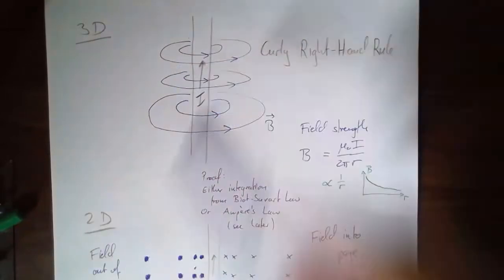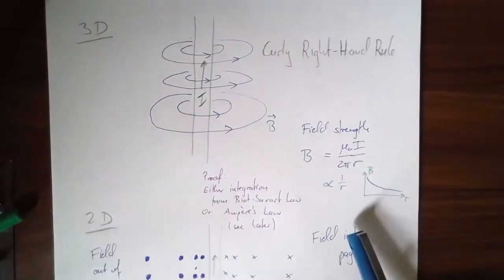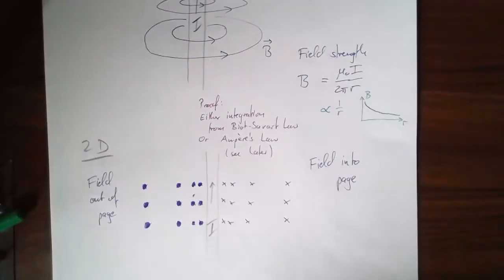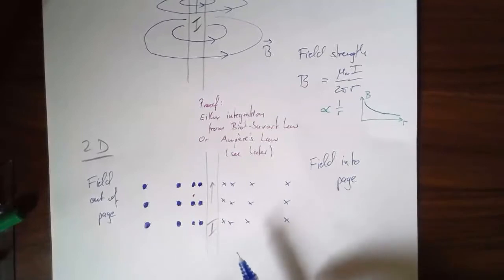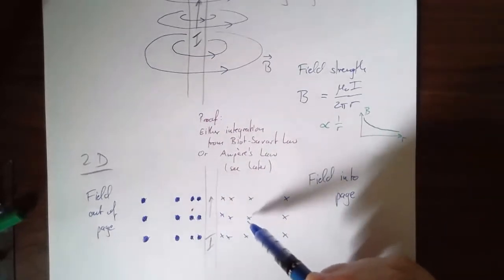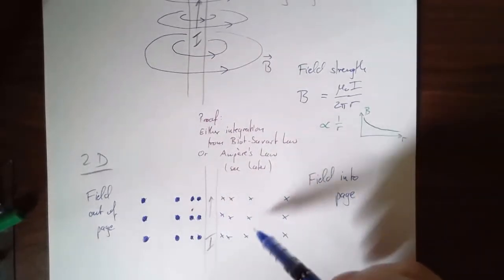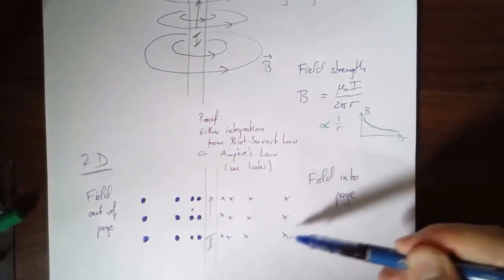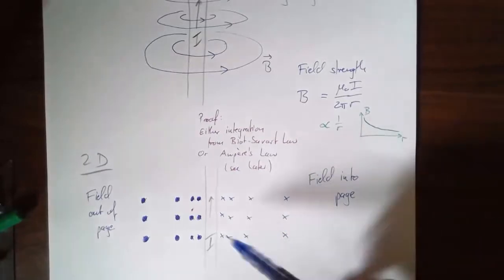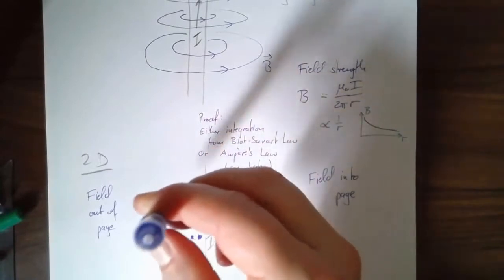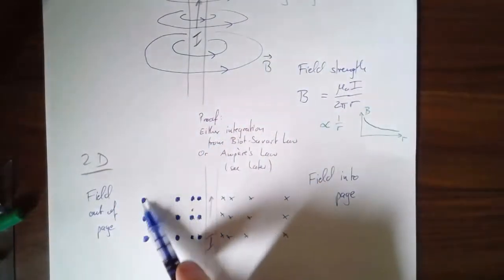If you try to draw this in 2D — it's hard to draw stuff in 3D unambiguously — in magnetism we have a method where we have symbols meaning the field's coming out of the page or going into the page. If the current is up and I want to show the field going into the page, I make little crosses, and the closer they are together the stronger the field. If the field comes towards us, out of the page, I use little dots.